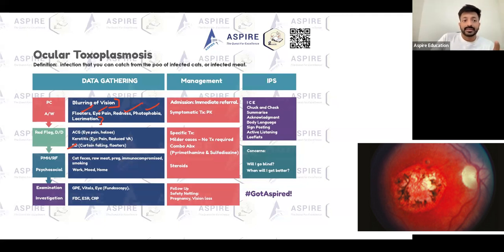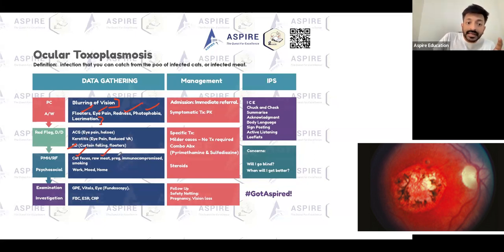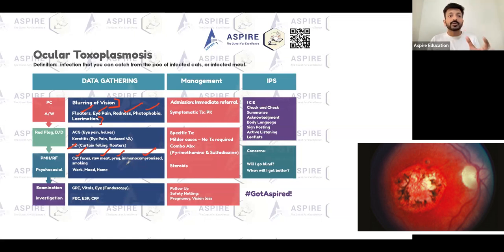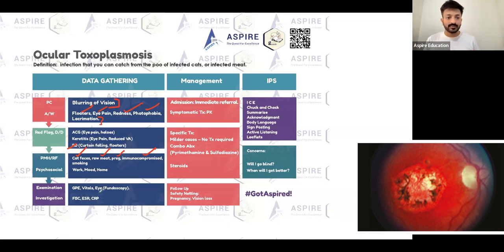How does the patient get it? Usually through cats — the patient might be living with a cat, exposed to cat feces, or handling raw meat. Risk factors include pregnancy, and immunocompromised patients — whether immunocompromised for any reason or taking steroids — are at higher risk of developing toxoplasmosis.